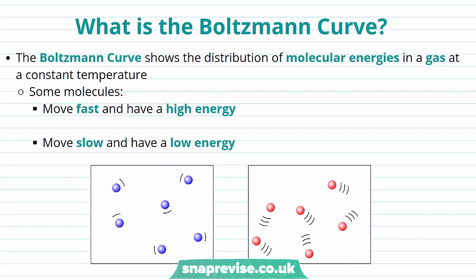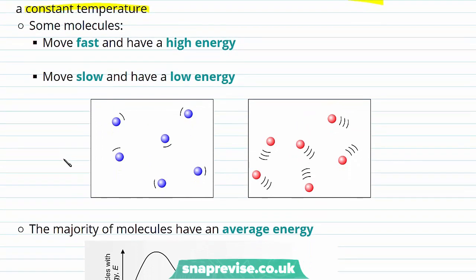So what is the Boltzmann curve? The Boltzmann curve shows us the distribution of molecular energies in a gas at a constant temperature. Some molecules move fast and have a high energy, but some molecules also move slow and have a low energy. But the majority of the molecules have an average energy.